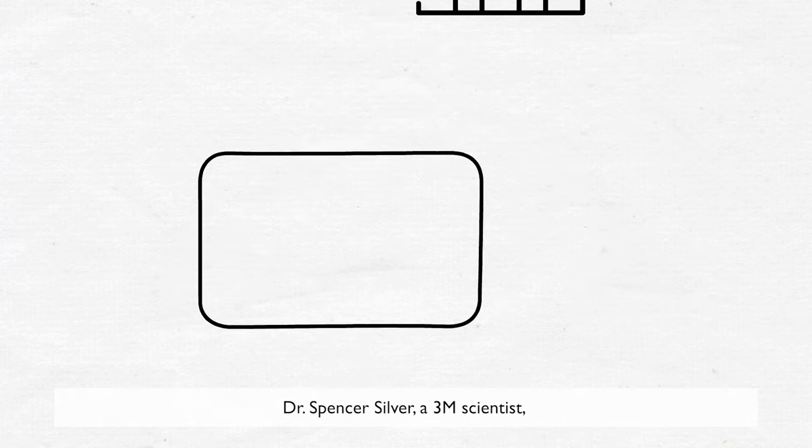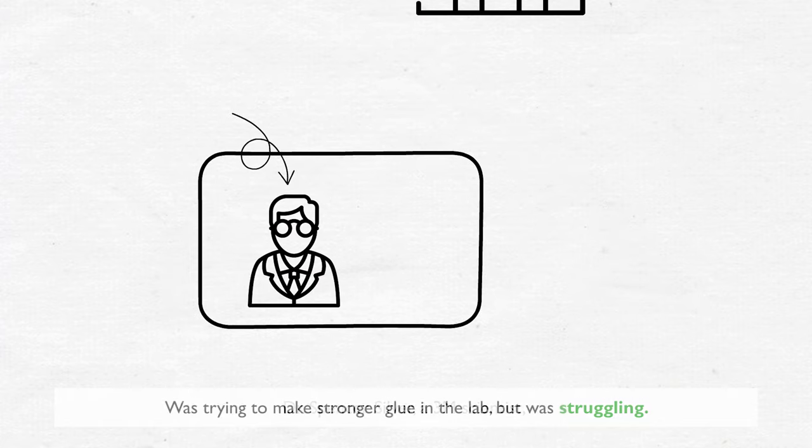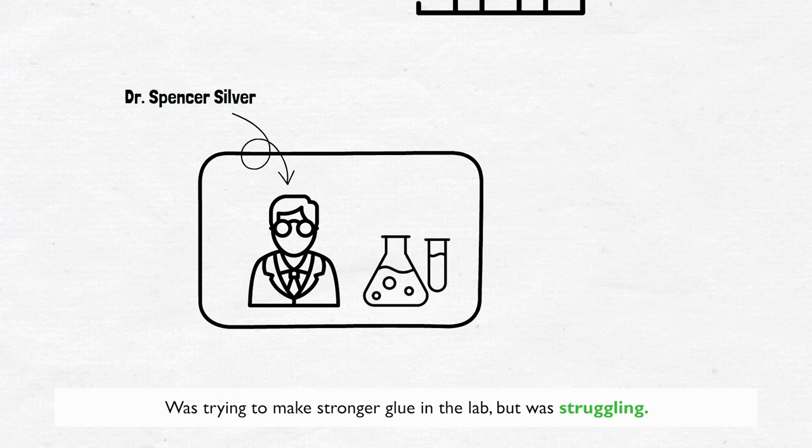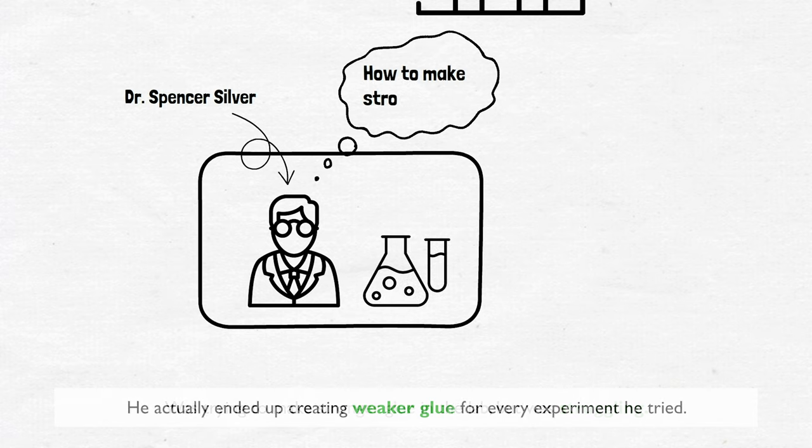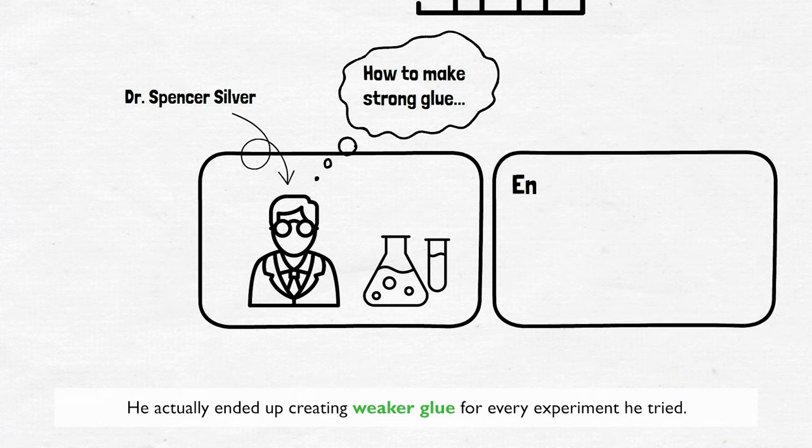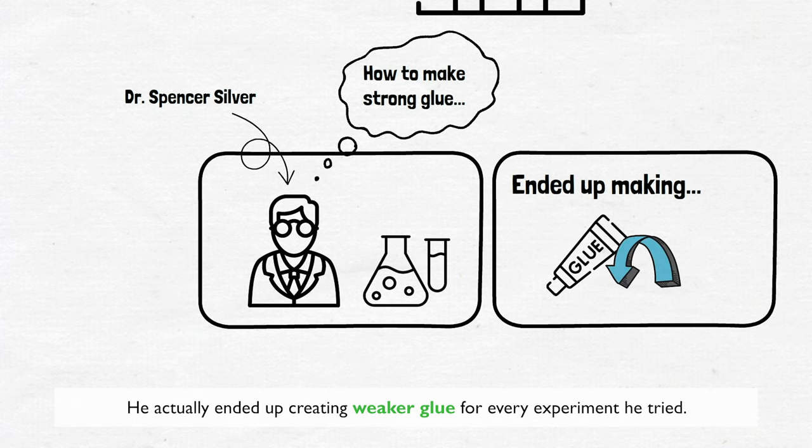Dr. Spencer Silver, a 3M scientist, was trying to make stronger glue in the lab but was struggling. He actually ended up creating weaker glue for every experiment he tried.